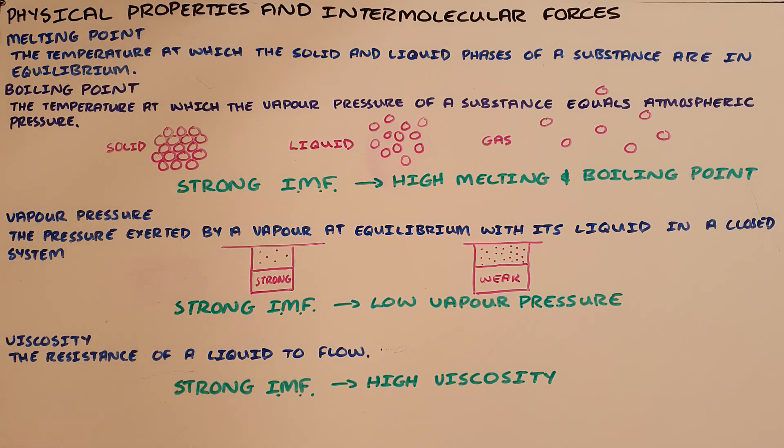The fourth and less common physical property is viscosity, which is the resistance of a liquid to flow. A substance like honey would have a very high viscosity because it is very resistant to flow, and a substance like water would have a very low viscosity because it flows very easily.